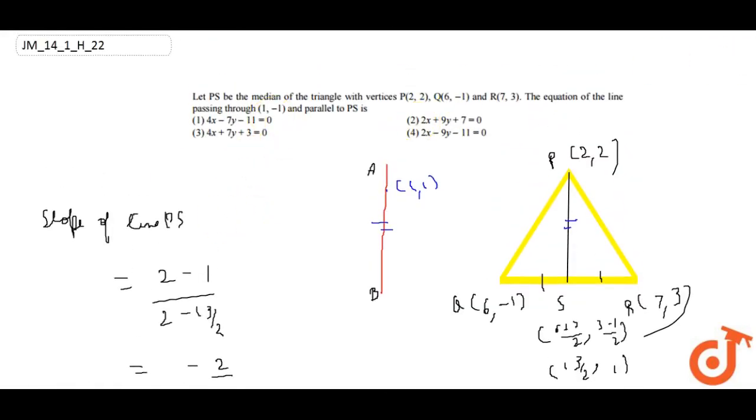Now which option do we have? The second option: 2x+9y+7 = 0. This will be our answer.